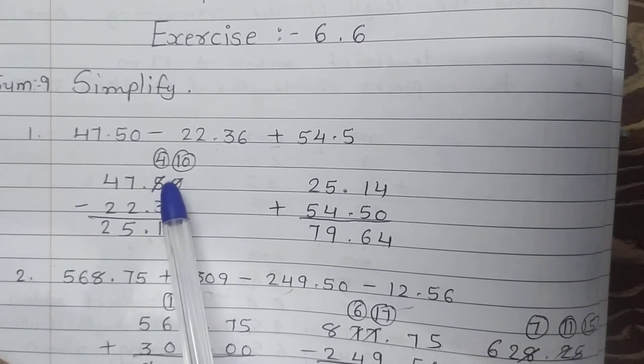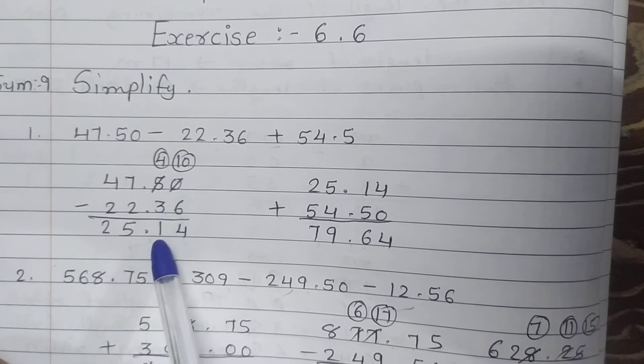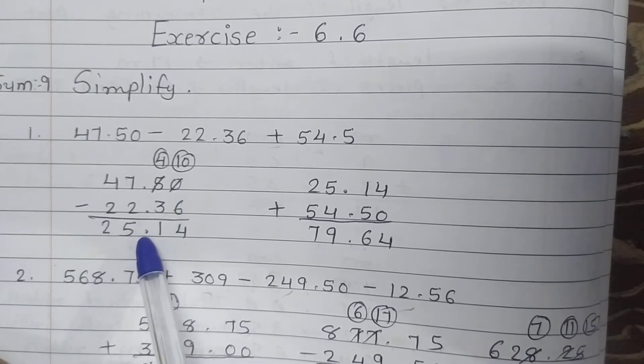10 minus 6 is 4. Cut the 5, less than 5 is 4. 4 minus 3 is 1. Point as it is.